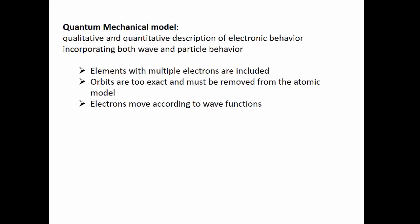The next atomic model that came about was the quantum mechanical model, and this is regarded to be our current atomic model. This is both a qualitative and a quantitative description of how electrons move within an atom. Qualitative meaning showing us where they're going, and quantitative in that it has a very specific set of equations that can show us how the electrons are moving. We are not going to be tackling that quantitative part.